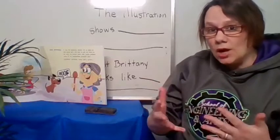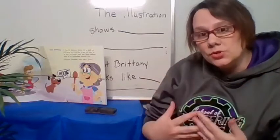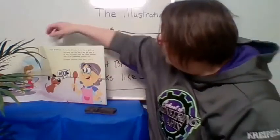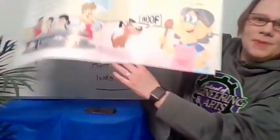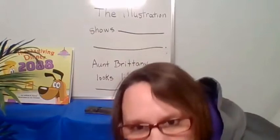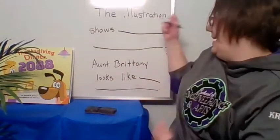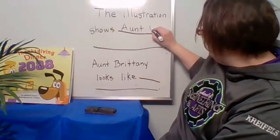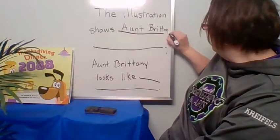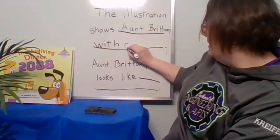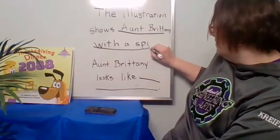Okay, first graders, we've been talking about how we can use illustrations to tell about the characters and the setting. Here today, we were just looking at this page with Aunt Brittany on it. This illustration shows Aunt Brittany with a spoon — so I might know that Aunt Brittany is cooking or doing something of the sort.